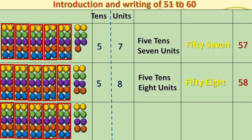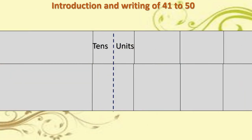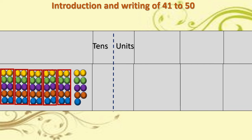Now, fifty-eight is here. I am going to add one blue bead. So, we got five tens and nine units — that is nothing but fifty-nine, fifty and nine. Dear children, here nine singles are there. In the next count, we are going to add one more blue bead. Fifty-nine beads are there; fifty beads are arranged in blocks and nine singles are there. I am going to add one more bead.